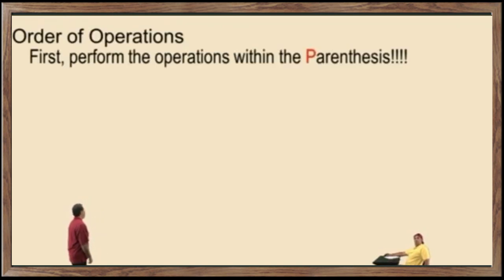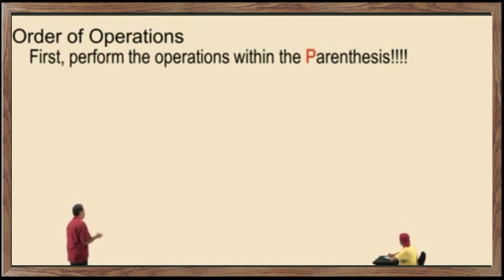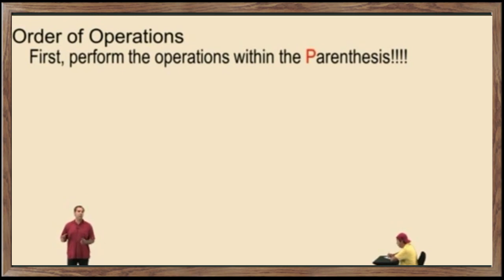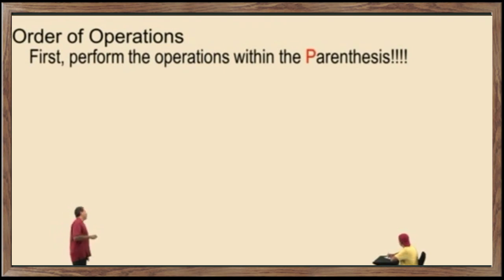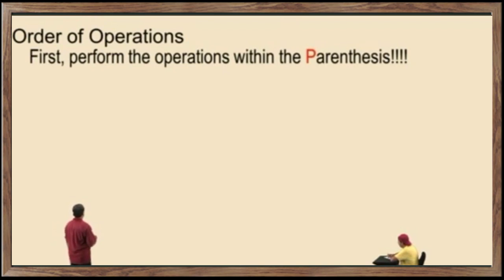Order of operations. First, when we're simplifying an expression, we perform the operations within the parentheses. The first category in order of operations refers to parentheses, but there are actually other types of grouping symbols that fall in this category. In this course, we're only talking about parentheses. We'll get to the others later. So the first thing you do is perform the operations within the parentheses.